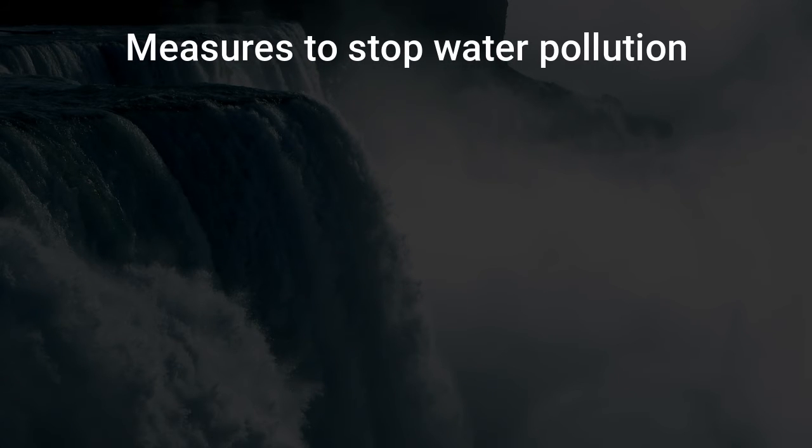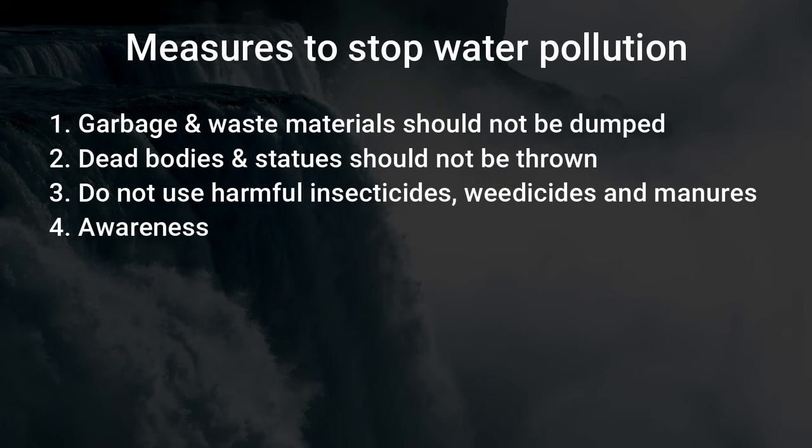After this next topic is measures to stop water pollution. So as we can stop the water getting polluted by different activities. First garbage and waste material should not be dumped in the rivers and ponds. Second dead bodies and statues of god and goddess should not be thrown in the ponds and rivers.